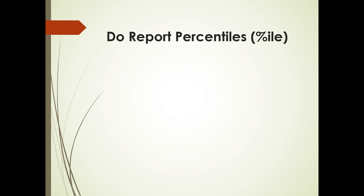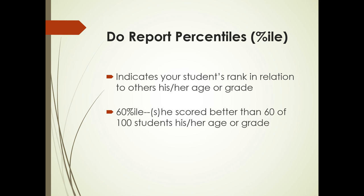Do report percentiles. Percentiles indicate your student's rank in relation to his or her age or grade. So if someone got at the 60th percentile, she scored better than 60 out of 100 students of his or her age or grade, whichever norms were used, age norms or grade norms. Percentiles, therefore, are least likely to be misinterpreted and they're most likely to be understood by parents.